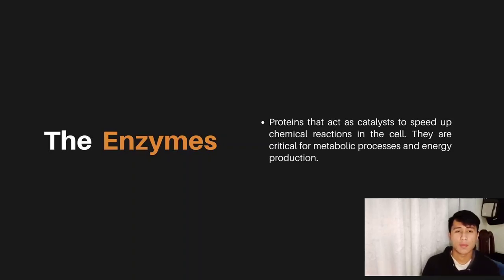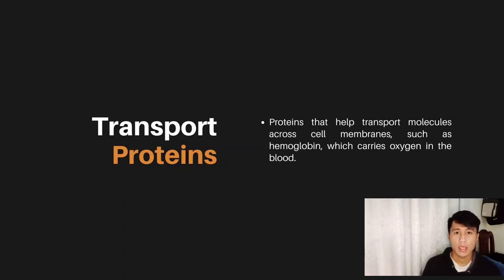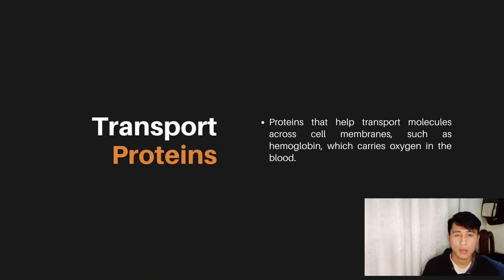Third is transport proteins — proteins that help transport molecules across cell membranes, such as hemoglobin, which carries oxygen in the blood. An example of a transport protein is the sodium-potassium pump, which helps maintain the balance of sodium and potassium ions inside and outside the cell. The pump actively transports three sodium ions out of the cell and two potassium ions into the cell against their concentration gradients, helping to maintain the resting potential of the cell membrane and supporting various cellular functions.